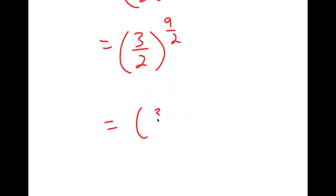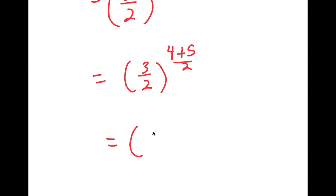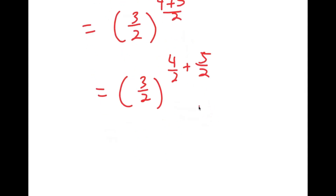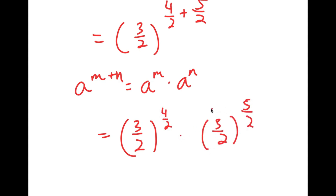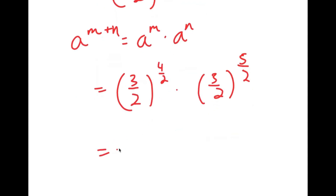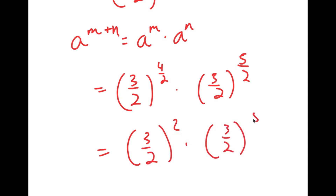Now, 9 over 2 is the same thing as 4 plus 5 over 2, which is equal to 4 over 2 plus 5 over 2. Using the property a to the power of m plus n equals a to the power of m times a to the power of n, this is going to equal 3 over 2 to the power of 4 over 2 times 3 over 2 to the power of 5 over 2. Now, 4 over 2 is equal to 2.